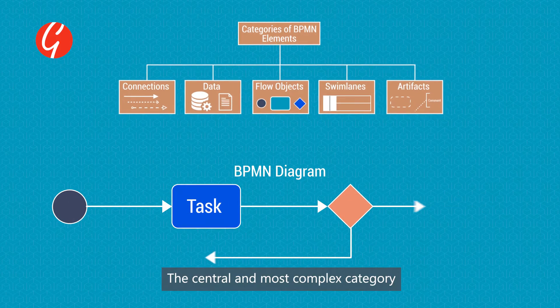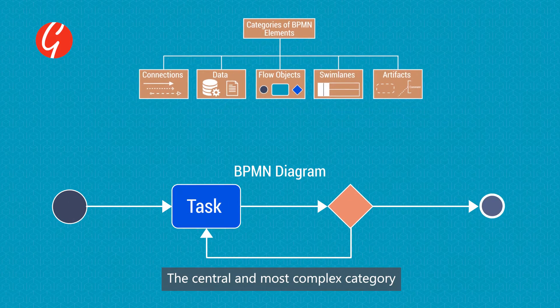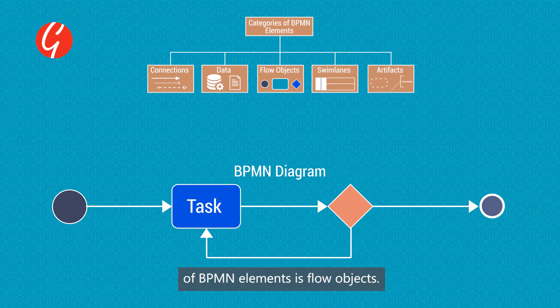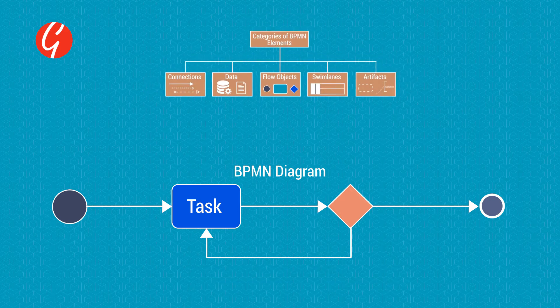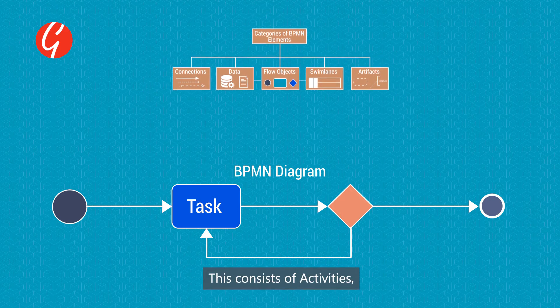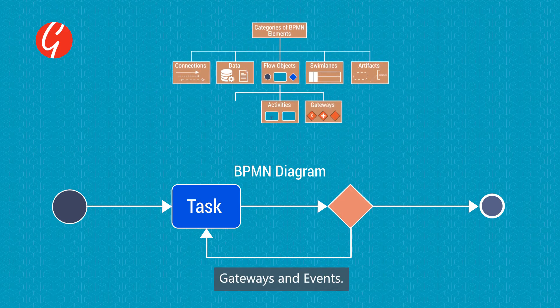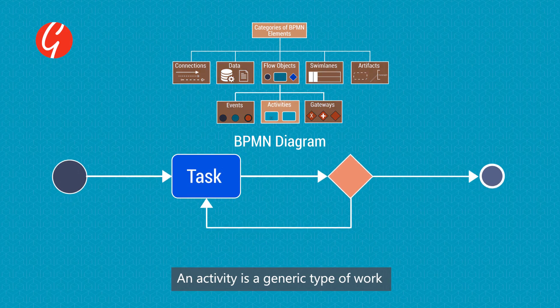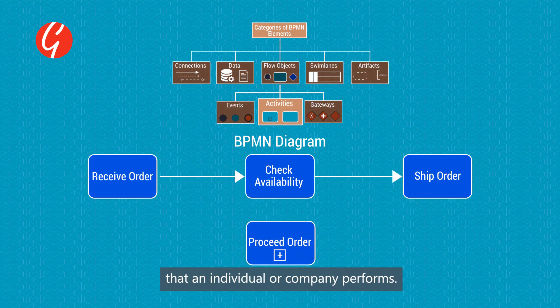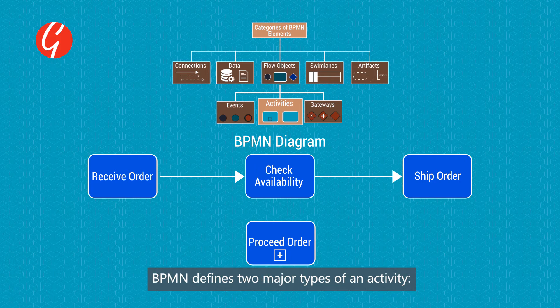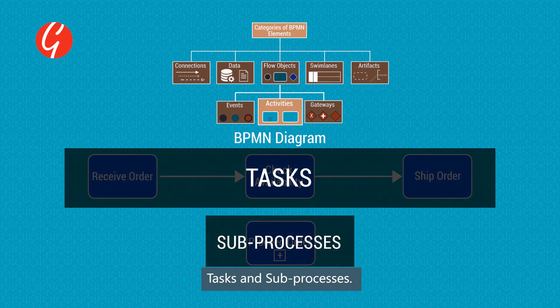The central and most complex category of BPMN elements is flow objects. This consists of activities, gateways and events. An activity is a generic type of work that an individual or company performs. BPMN defines two major types of an activity: tasks and sub-processes.